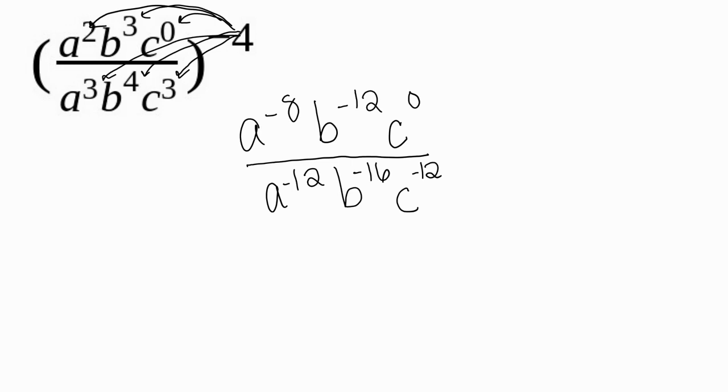Before I go any further, I notice that I have c to the zero power. And I know that anything raised to the zero power is one. So I'm going to eliminate that because anything times one is still itself. Anything divided by one is still itself. So we don't need to write one there.